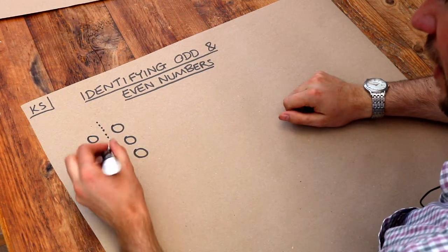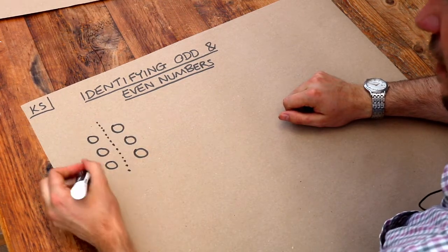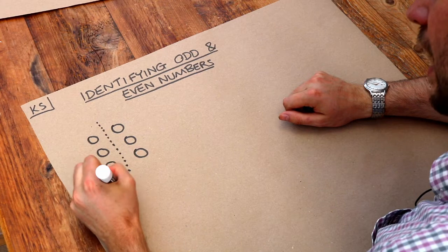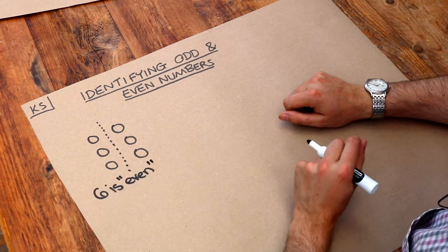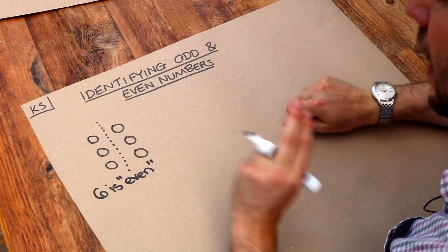Now we say that six, one, two, three, four, five, six, six is even because you can split it evenly into two.